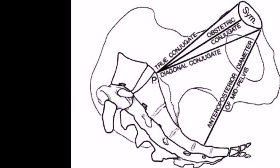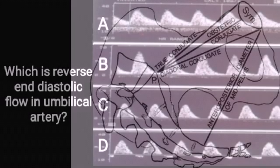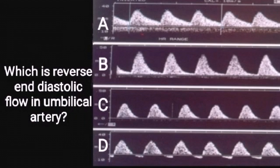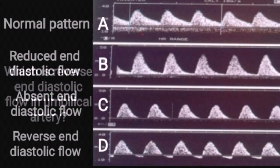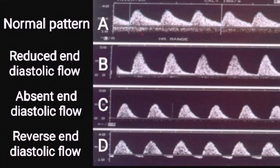Which is the true conjugate? Answer: A. Which is reverse end-diastolic flow in umbilical artery? Answer: D.